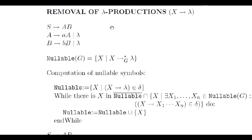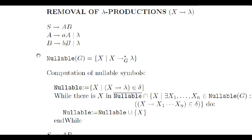For example, this grammar has two lambda productions. Our goal is to remove them. However, we cannot just erase these rules, since we want to preserve the generated language. Note that if we simply erase them from A and from B, it won't be possible to generate any word, since we would always obtain either an A or a B after applying a replacement.